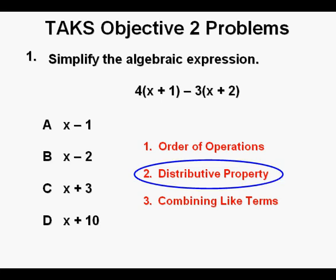First we'll use the distributive property of algebra. The 4 outside parentheses is distributed to the x and the 1, both inside parentheses. And the negative 3 is distributed to the x and the positive 2 inside the other set of parentheses. Distributed, this becomes 4x plus 4 and minus 3x minus 6.